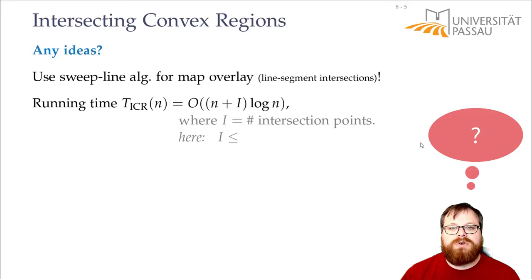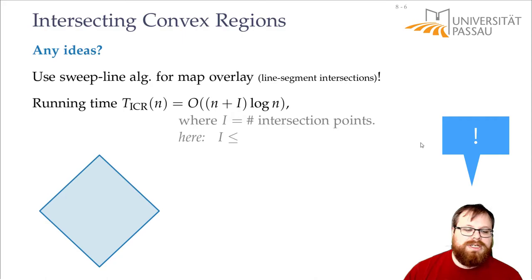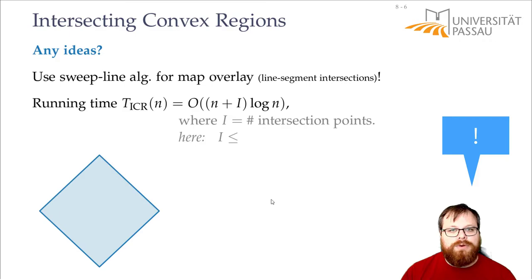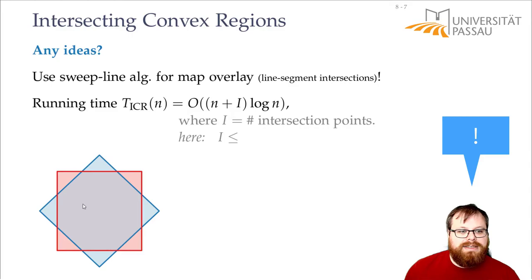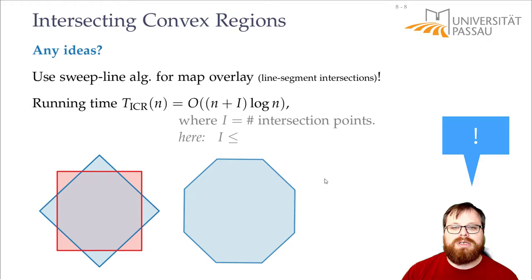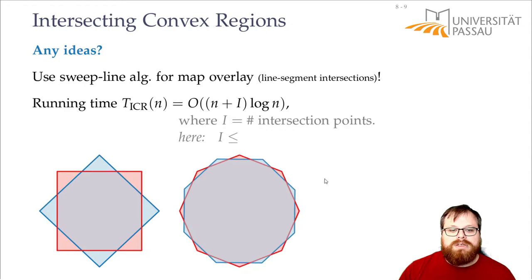How big can the number of intersection points be? Let's look at an example: a convex region with four corners. The maximum I could get intersecting it with another convex set of four corners was eight, by overlaying them slightly shifted. For n corners, the worst case is a slightly rotated copy, giving 2n intersection points.